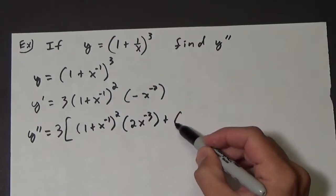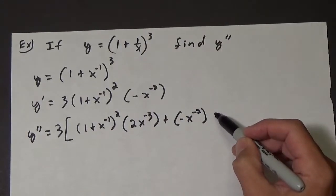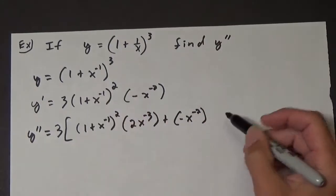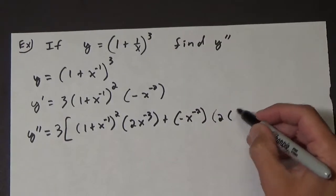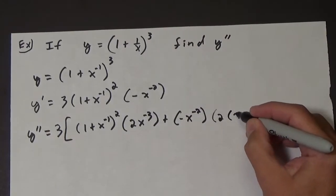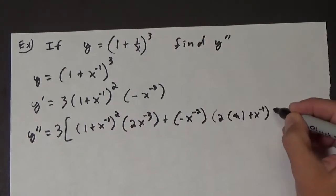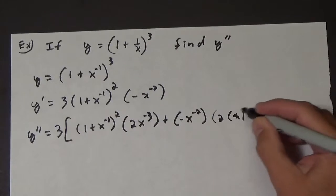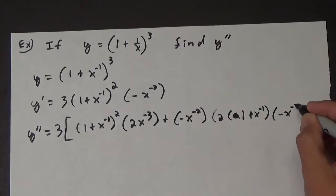Plus the second, which is negative x to the negative 2, times the derivative of the first. And here we have a chain rule. So it's going to be 2 times 1 plus x to the negative 1, and then we subtract 1, so it's to the first power, times the derivative of the thing inside, which is negative x to the negative 2.